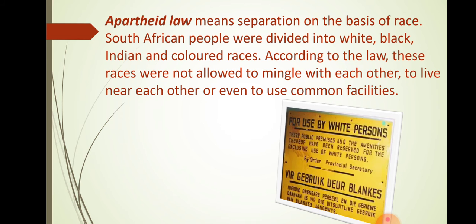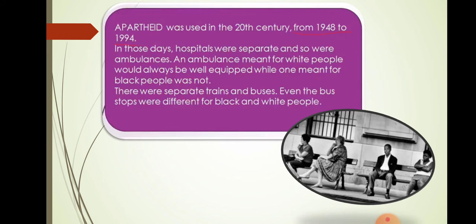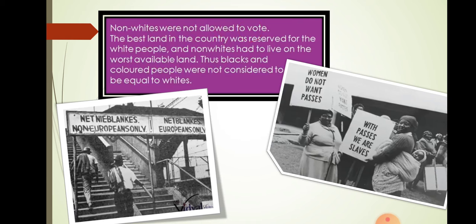Maya could not believe her ears. Maya's mother sounded angry when she spoke about life under Apartheid. She told Maya that in those days, hospitals were separate and so were ambulances. An ambulance meant for white people would always be well equipped, while one meant for the black was not. There were separate trains and buses, and even the bus stops were different for black and white people. Non-whites were not allowed to vote. The best land in the country was reserved for the white people and non-whites had to live on the worst available land. Thus, blacks and colored people were not considered to be equal to whites.